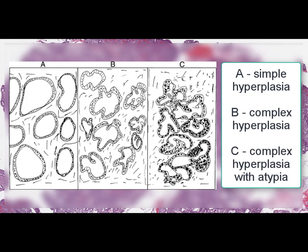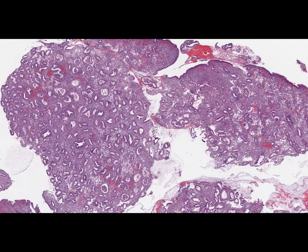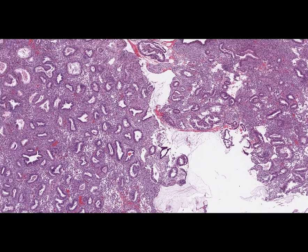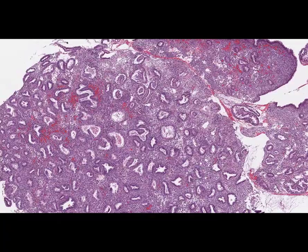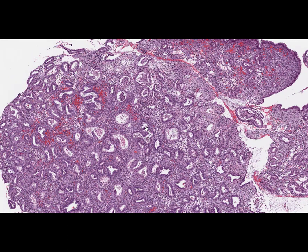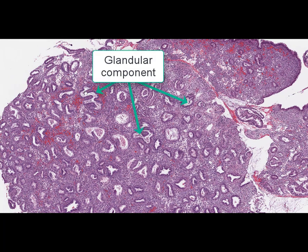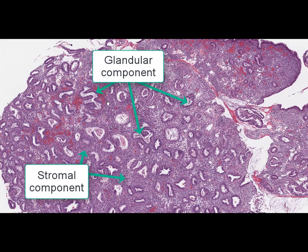The changes are divided into simple and complex types, and they can be with or without atypism. In this slide, we can see a pattern of complex endometrial hyperplasia without atypism. At low magnification, the two basic components of endometrium are clearly seen: the glandular component and the stromal component, where the glandular component is increased and occupies the greater part of the histological section.